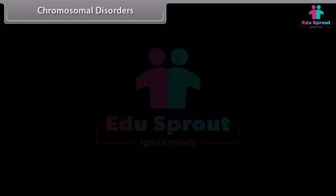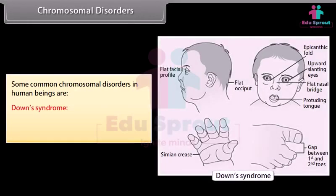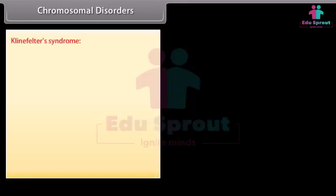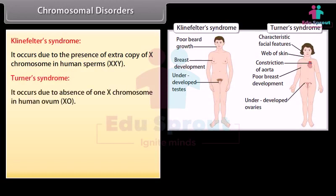Some common chromosomal disorders in human beings are: Down's Syndrome — occurs due to trisomy of chromosome 21; Klinefelter's Syndrome — occurs due to the presence of an extra X chromosome (XXY); Turner's Syndrome — occurs due to the absence of an X chromosome (XO).